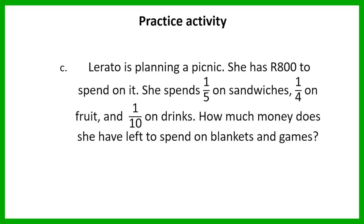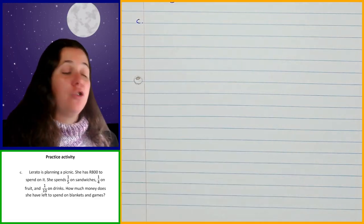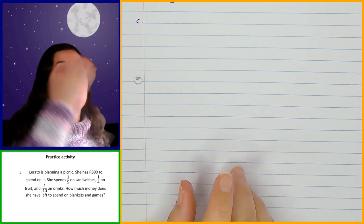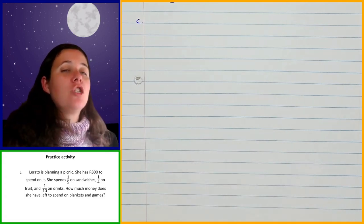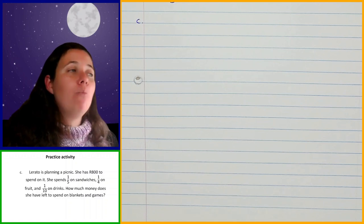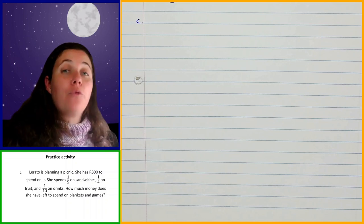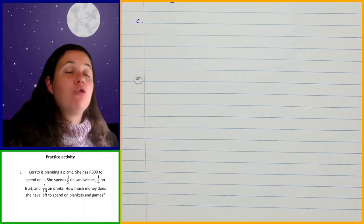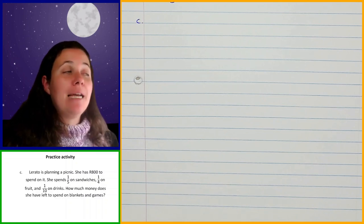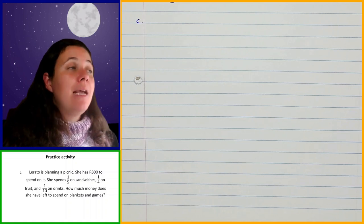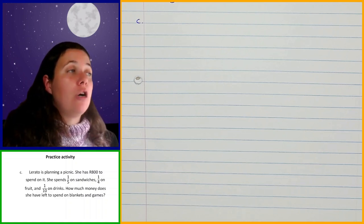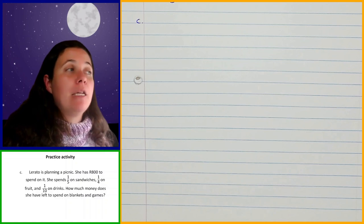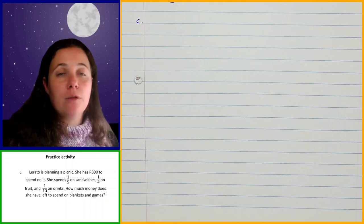Let's go through the next question. There are a couple of ways you can do this. One way is to take the different fractions given and find out how much she spent on sandwiches, fruit, and drinks altogether as a fraction, then use that to work out the amount of money spent, and subtract from the total to find what's left for blankets and games.